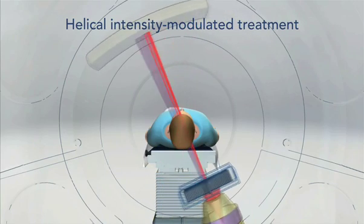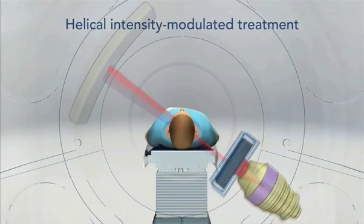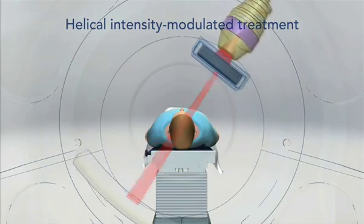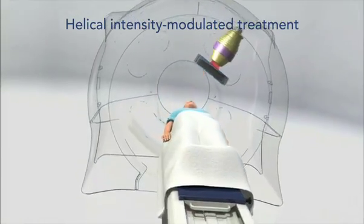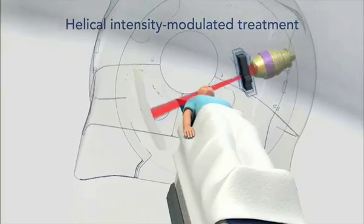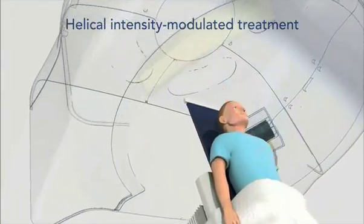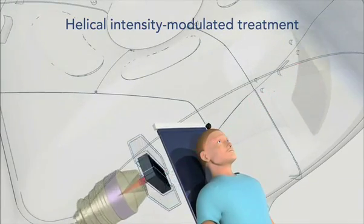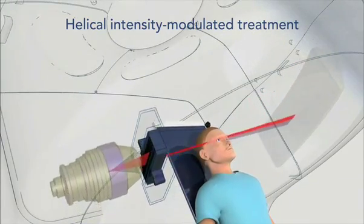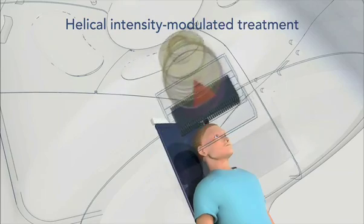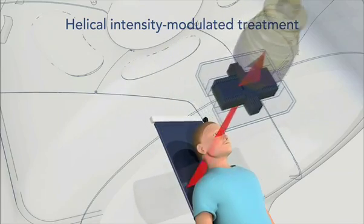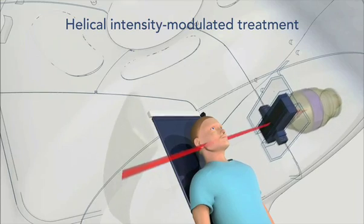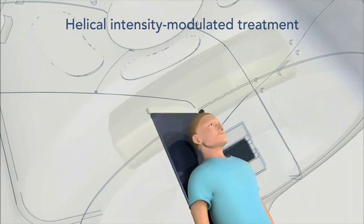The 64 leaves in our unique binary multileaf collimator create tens of thousands of optimized 6mm wide beam elements known as beamlets. This unique combination of a helically rotating beam source and beamlet-based delivery is what distinguishes TomoTherapy treatment from other forms of intensity-modulated radiotherapy.